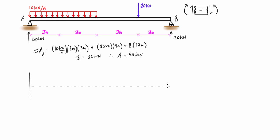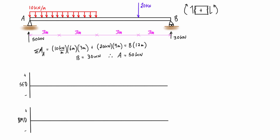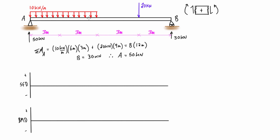Now we want to draw our shear force diagram and bending moment diagram. We go from left to right, starting with a virtual cut just to the right of support A. The support provides 50 kilonewtons upward, and since the distributed load is insignificant at an infinitesimally small distance away, the internal shear must be 50 kilonewtons pressing down. By our positive sign convention — shear pressing down to the right of a cut is positive — so our shear force diagram starts at positive 50 kilonewtons.